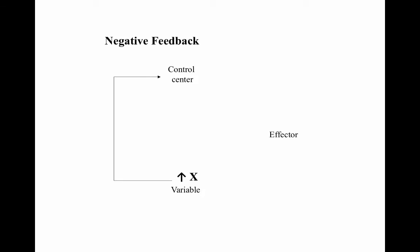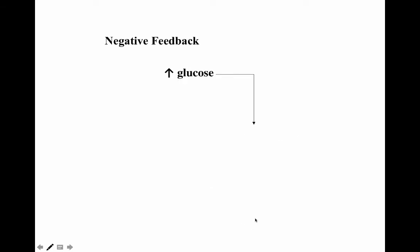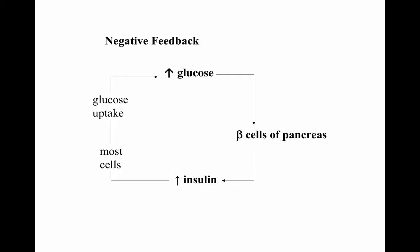In a glucose example of negative feedback: glucose increases in the bloodstream; the beta cells of the pancreas sense that and release insulin; insulin allows most cells to take up more glucose; and blood glucose then decreases — the negative feedback loop returning us to homeostasis.